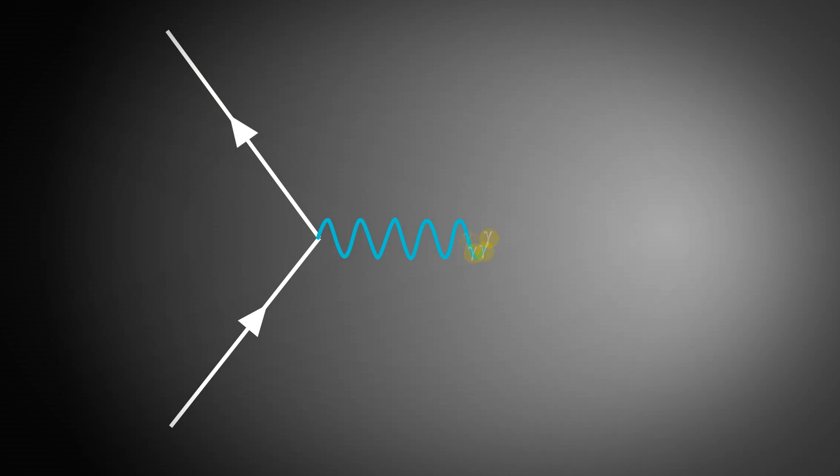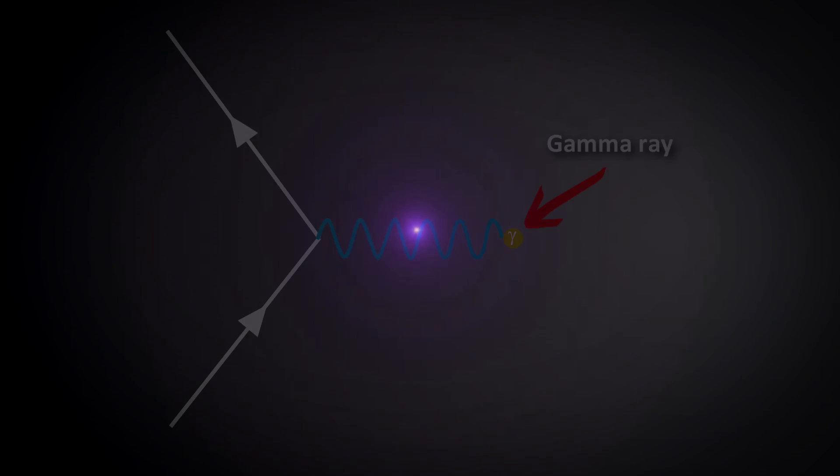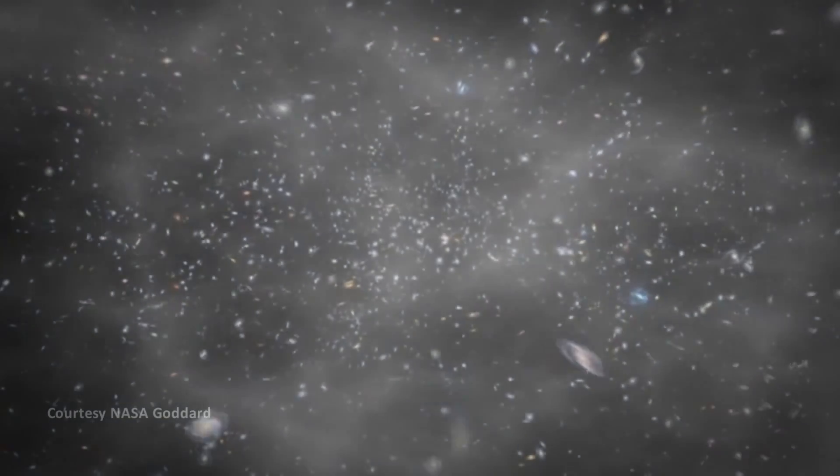Because our theories and observations indicate that whenever matter is created, an equal amount of antimatter is also created. For when matter and antimatter meet, they annihilate each other in a tremendous burst of energy. So the big bang should have created an equal amount of both matter and antimatter, resulting in a burst of energy and leaving behind pretty much nothing.